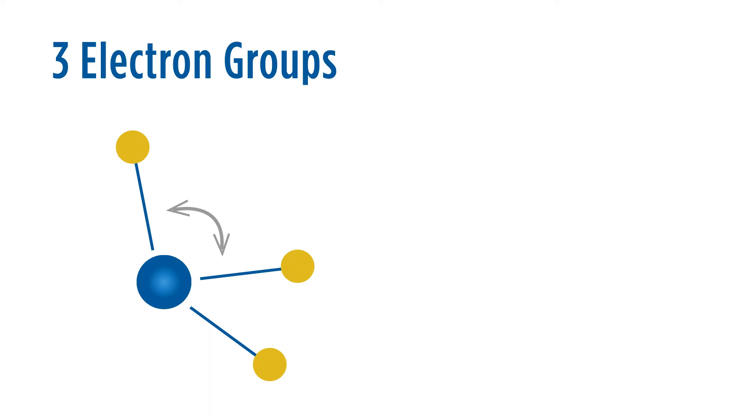If we look at a central atom with three electron groups around it, the same thing will occur. The electron groups will repulse each other until they got as far away from each other as possible. In the case of a central atom with three electron groups around it, that would be 120 degrees.